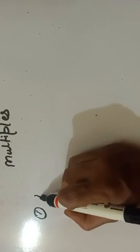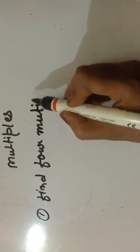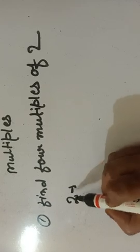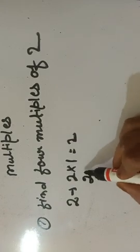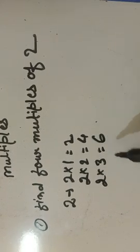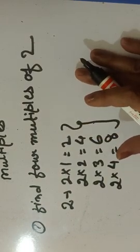Suppose the question asks to find the first 4 multiples of 2. How can we do it? First, we write 2, and after that: 2 multiplied by 1 is equal to 2, 2 multiplied by 2 is equal to 4, 2 multiplied by 3 is equal to 6, 2 multiplied by 4 is equal to 8. So up to 4, we multiply 2 and get the 4 multiples of 2.